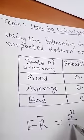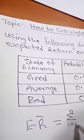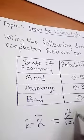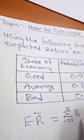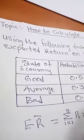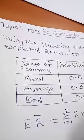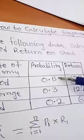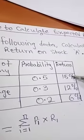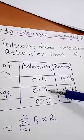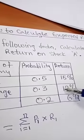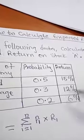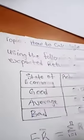Of the probability multiplied by the individual return. Simply, this probability multiplied by this plus this probability multiplied by this and this probability multiplied by this. Now, using this formula,